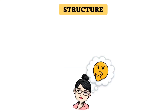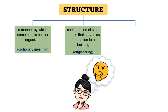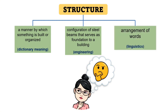For example, when you use the word 'structure' in your research, it may cause confusion to the readers because this word has several meanings. For its dictionary meaning, it is a manner by which something is built or organized. Whereas in the field of engineering, structure means the configuration of steel beams that serves as foundation to a building. While in the field of linguistics, structure refers to the arrangement of words.